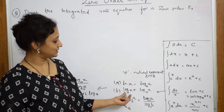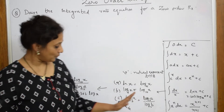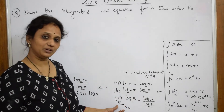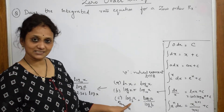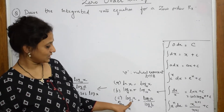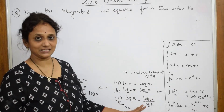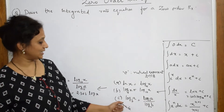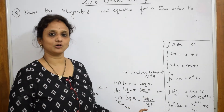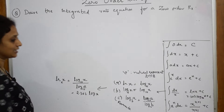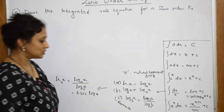log x is equal to log x base 10. Now when we apply the base change formula — log a base b is equal to log a divided by log b — we can write ln x as log x base e, which equals log x divided by log e. Solving this gives ln x equal to 2.303.